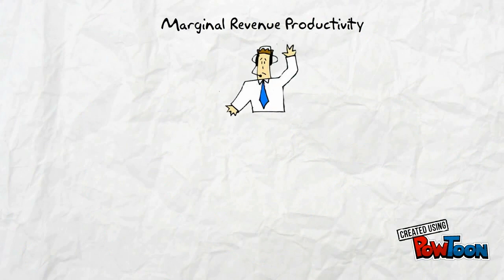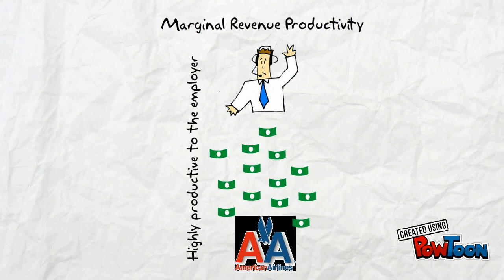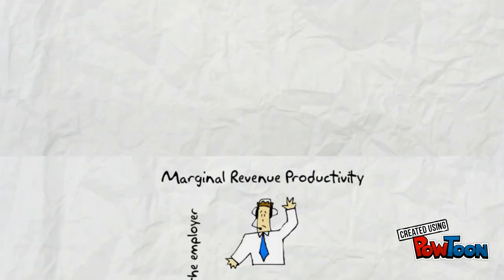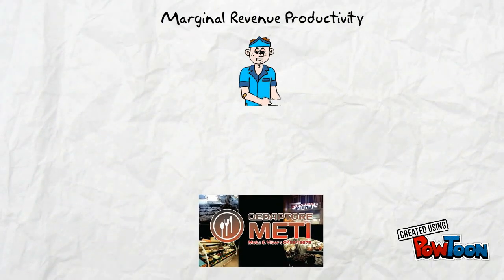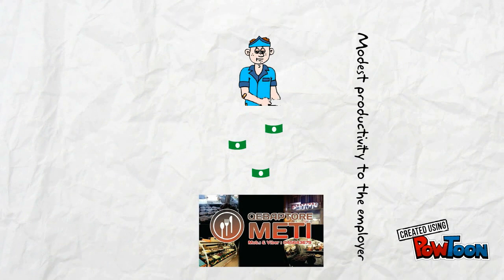Now we present two scenarios to explain marginal revenue productivity. Bard, the airplane pilot, works for American Airlines. Because his job is very productive and generates high revenues for his company, this leads to Bard having a very high salary. On the contrary, Nas works for a small employer. His job has modest productivity and generates little revenue. Therefore his salary is much lower. This explains how salary varies based on productivity and the revenue contribution employees make to their employers.